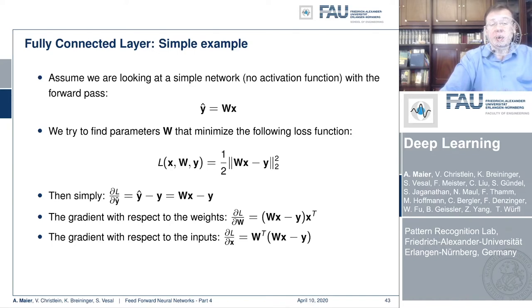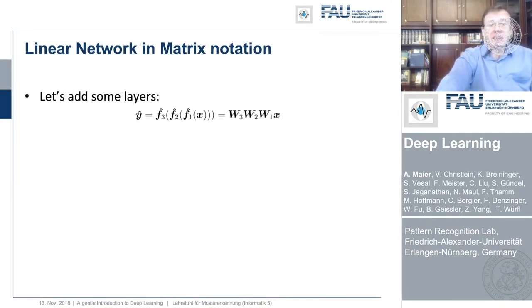For the L2 loss there are neat matrix derivatives available in the Matrix Cookbook. We compute the partial derivative of L with respect to y-hat, which gives us W*x minus y. Then we compute the weight update: the partial derivative with respect to W is (W*x minus y) times x transpose. The other gradient we need is the partial derivative with respect to x, which is W transpose times the loss vector (W*x minus y), as derived on the previous slide.